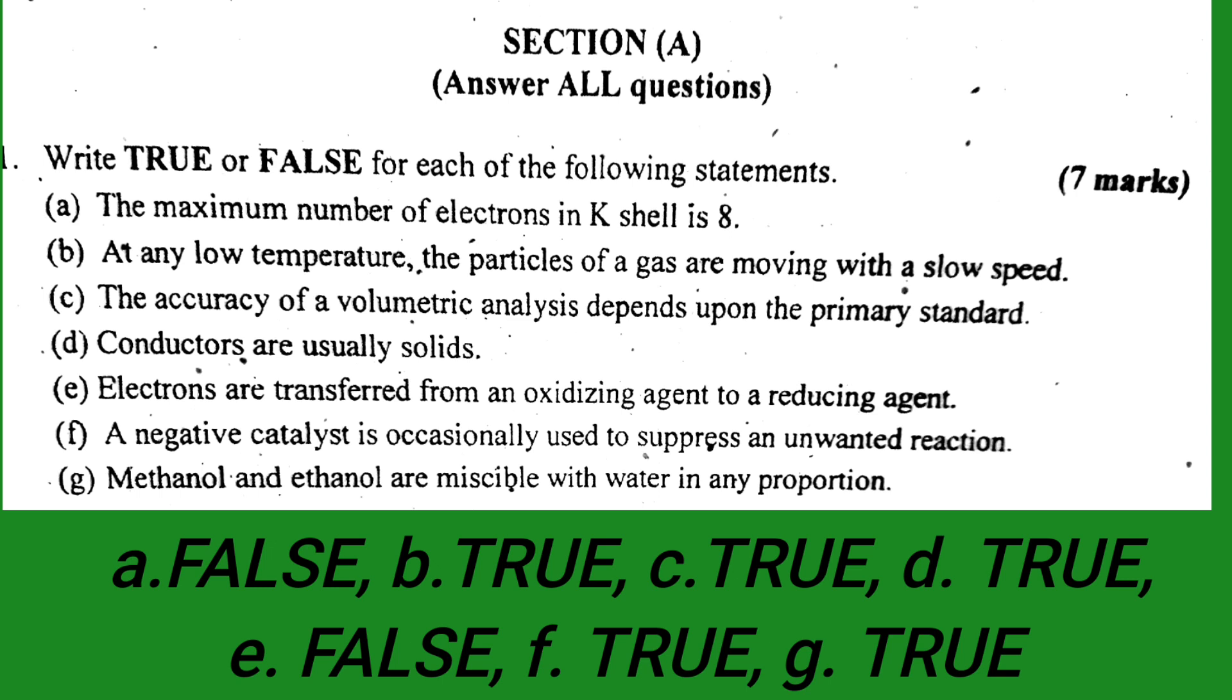Number F: a negative catalyst is occasionally used to suppress an unwanted reaction. This is true. Number G: methanol and ethanol are miscible with water in any proportion. This is also true.